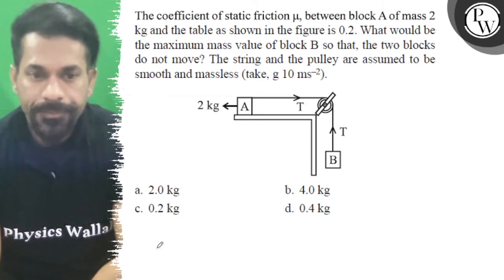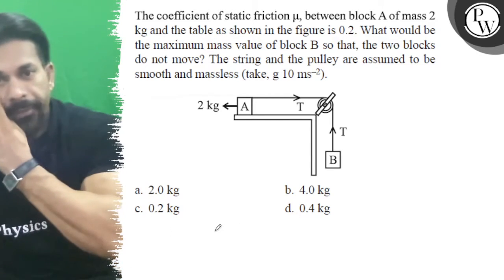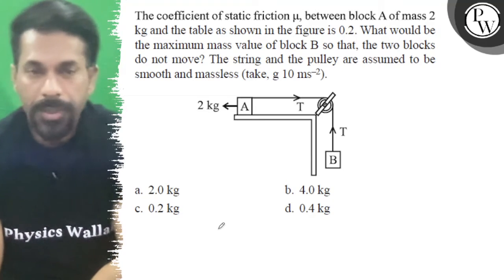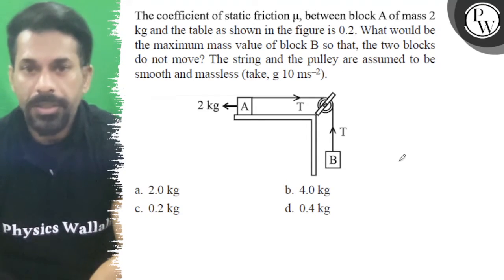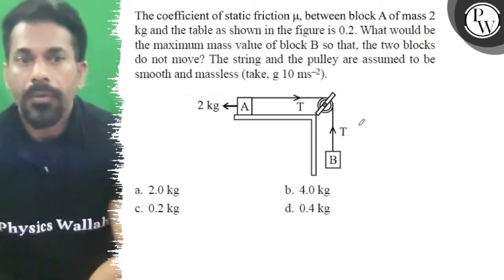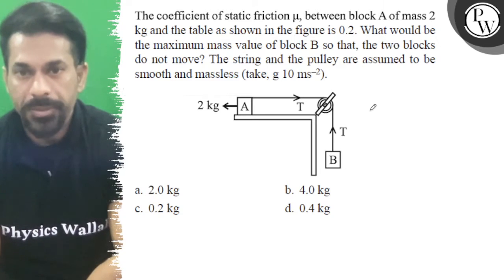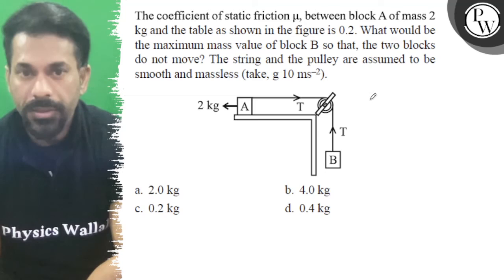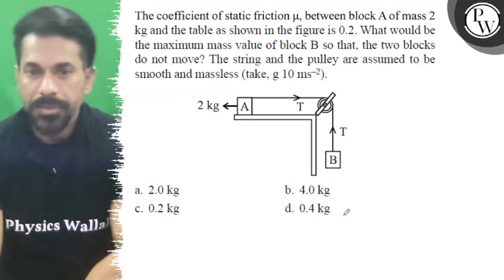Hello, let's see the question. The coefficient of static friction μ between block A of mass 2 kg and the table as shown in the figure is 0.2. What would be the maximum mass value of block B so that the two blocks do not move? The string and the pulley are assumed to be smooth and massless.